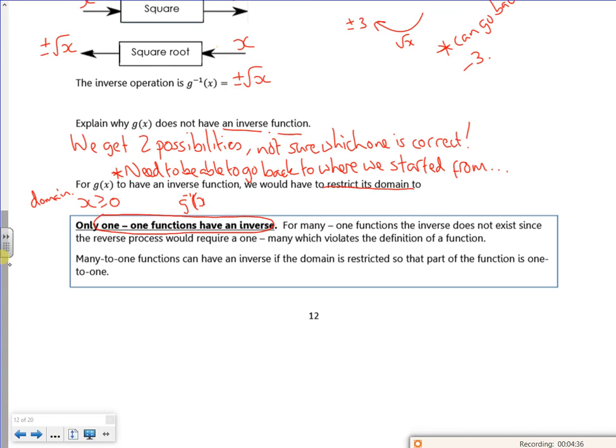So I want to make it that x is greater than or equal to zero. So we need to have a one to one, which is just a positive root of x. And that's okay then, because I haven't got the two options there.